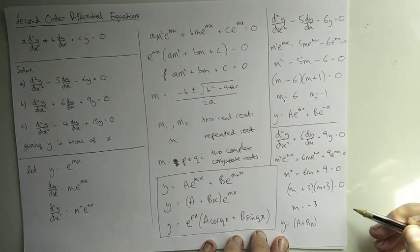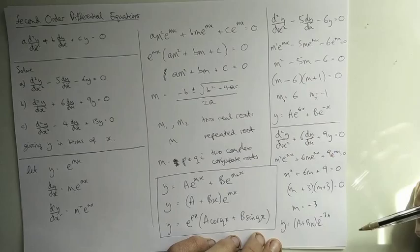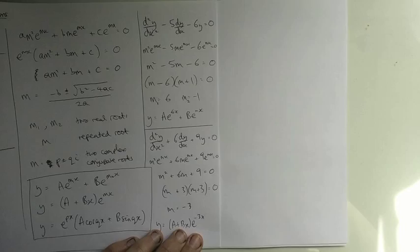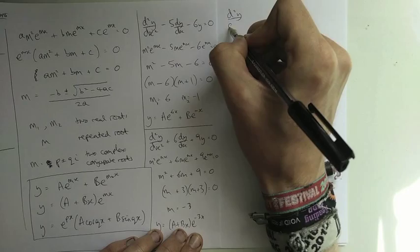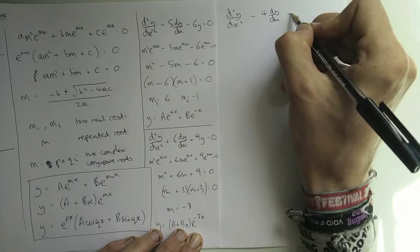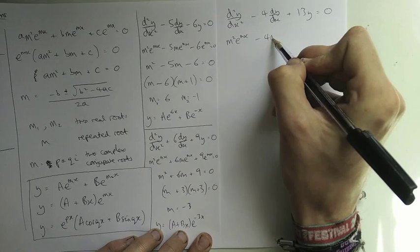Once you find your roots, you look at the three cases and choose which solution form applies. We've got one more to do — let's work it on a different bit of paper. The last one is d²y/dx² − 4 dy/dx + 13y = 0. We do the same substitution and cancel out e^(mx).